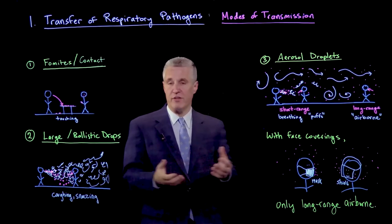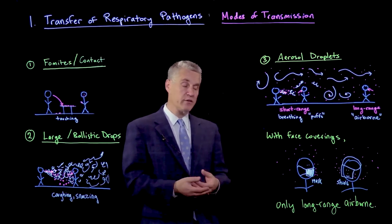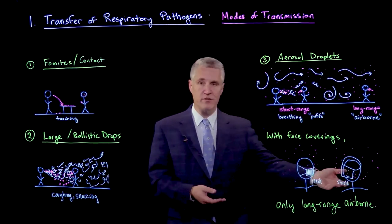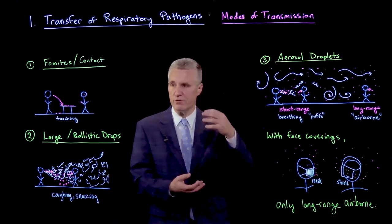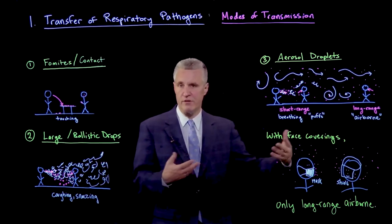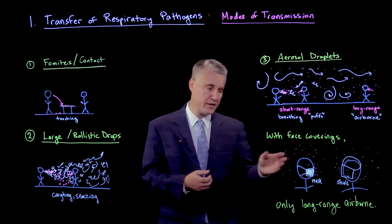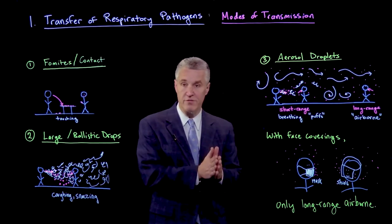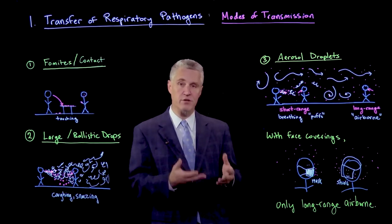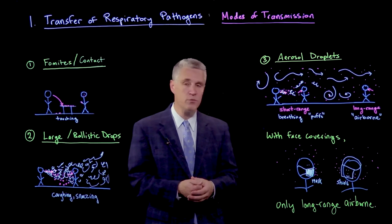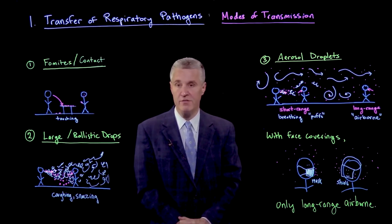Those droplets are quickly spread around the room, leaving us with the airborne mode of transmission. There is an important distinction between a mask and a shield: while both block the momentum of fluid that leads to respiratory jets and plumes of transfer, a mask additionally provides filtration, which can block a significant fraction of droplets — not necessarily all. This will be an important aspect of understanding how to make spaces safe from airborne transmission.